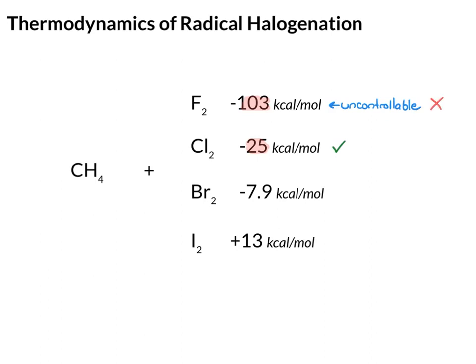The radical bromination is exothermic, not by as much as the chlorination, but it still has an exothermic value, so this one works. And then finally, if you look at the radical iodination, this value is not negative. It's positive. That means it's endothermic, and it really doesn't work. So the only two types of radical halogenations we're going to be doing are the chlorination and the bromination.